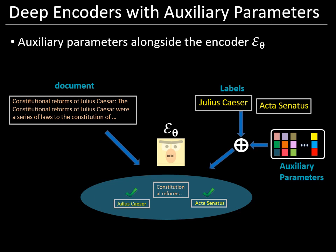DEXA bridges the semantic gap by introducing auxiliary parameters so that the label text embeddings are not entirely dependent on the label text. This increased model capacity enables DEXA to predict Acta Senatus in our example.